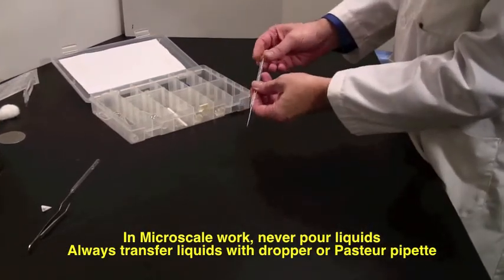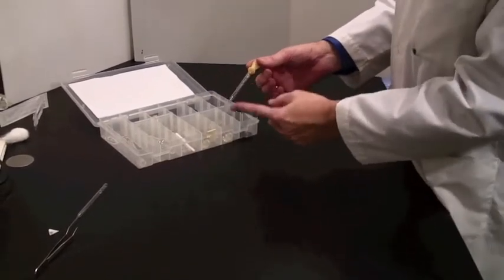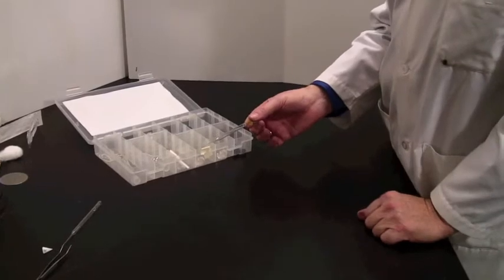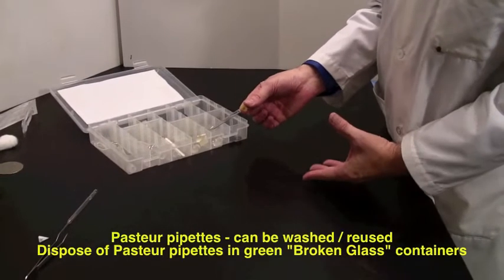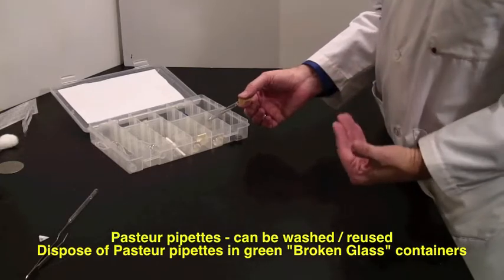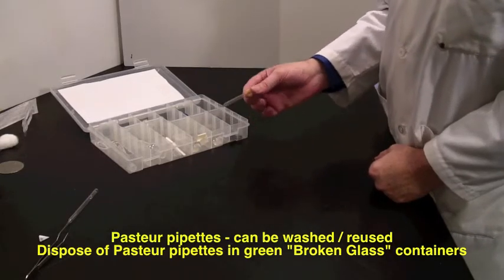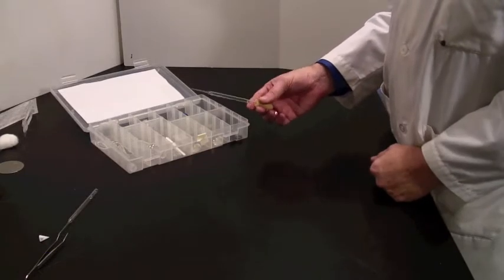Pasteur Pipette - you've been given bulbs for this, and the bulb is recyclable. The Pasteur Pipette itself can be used several times as long as it's clean. Once it's dirty, you can throw it into the broken glass, the green container. You can wash this also with water or with acetone.